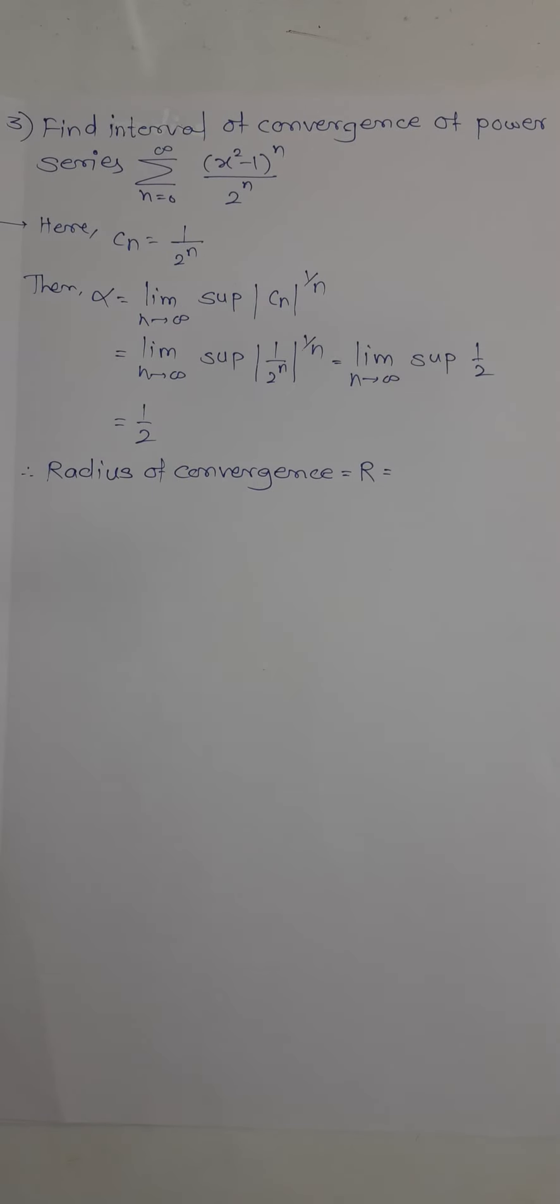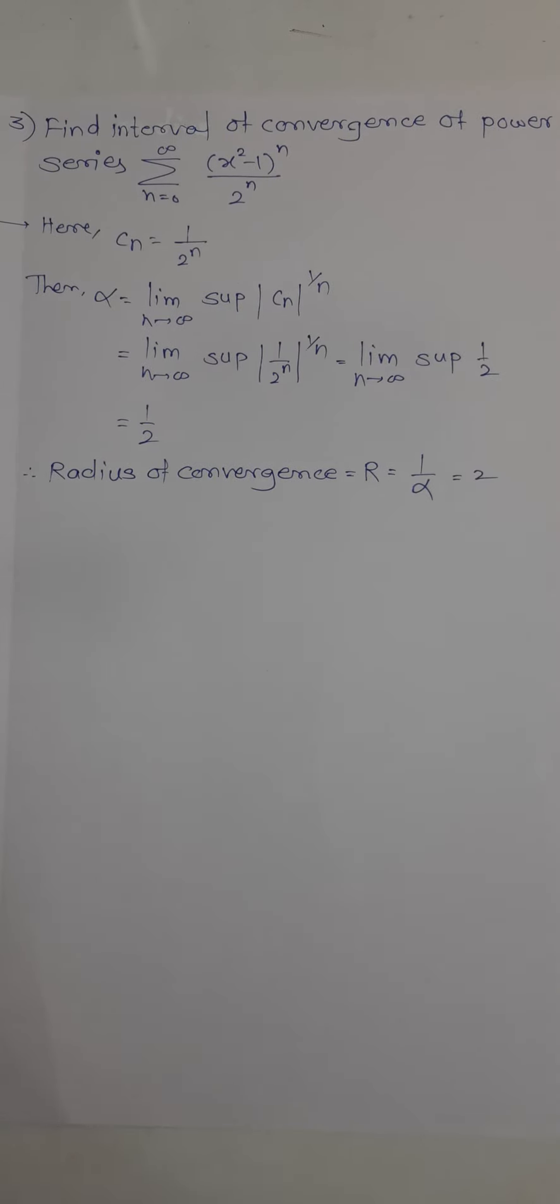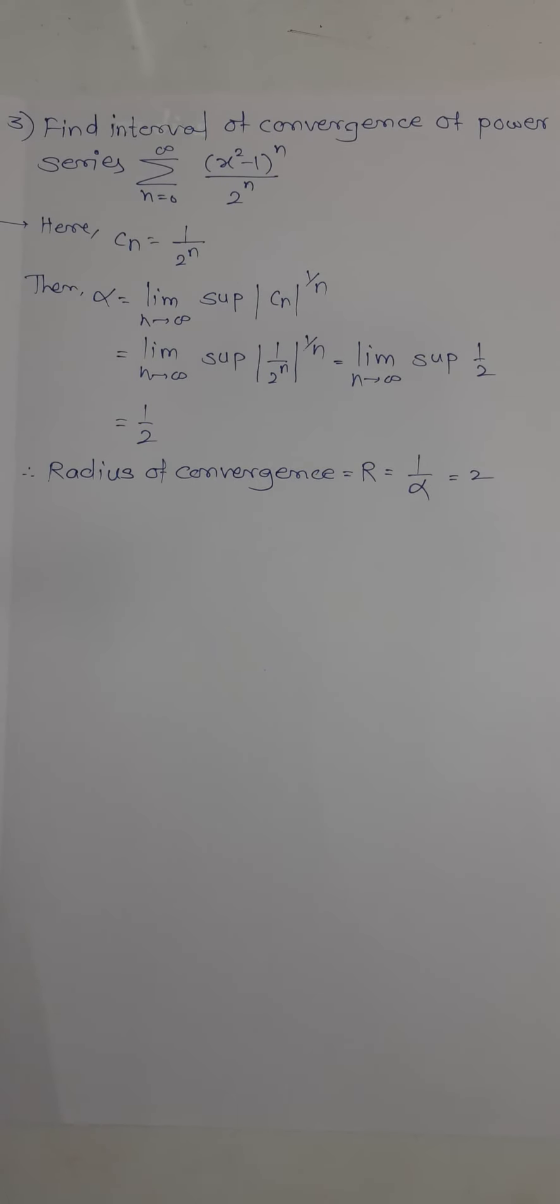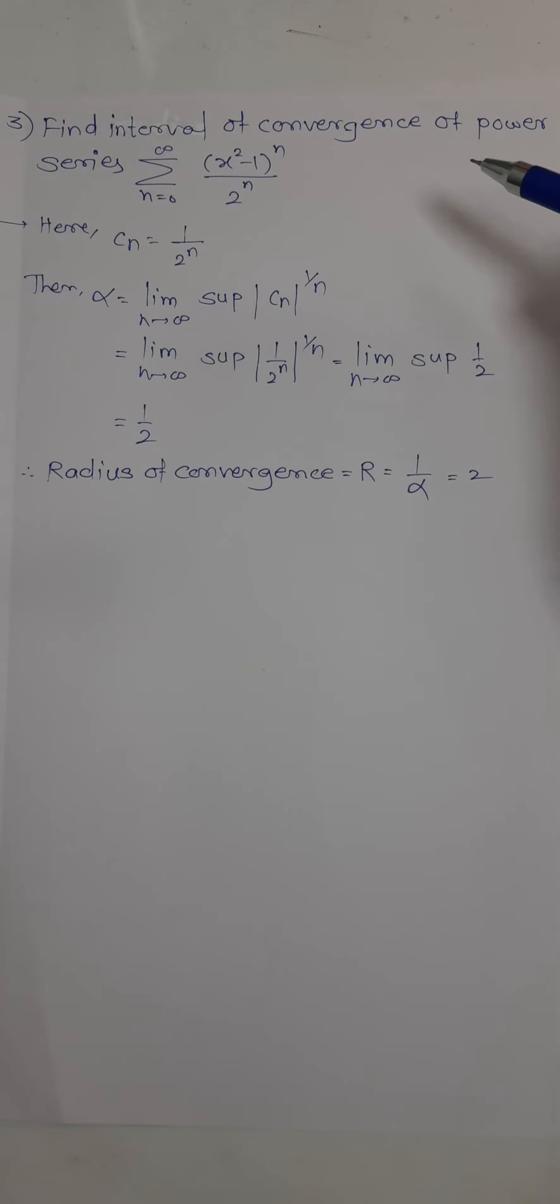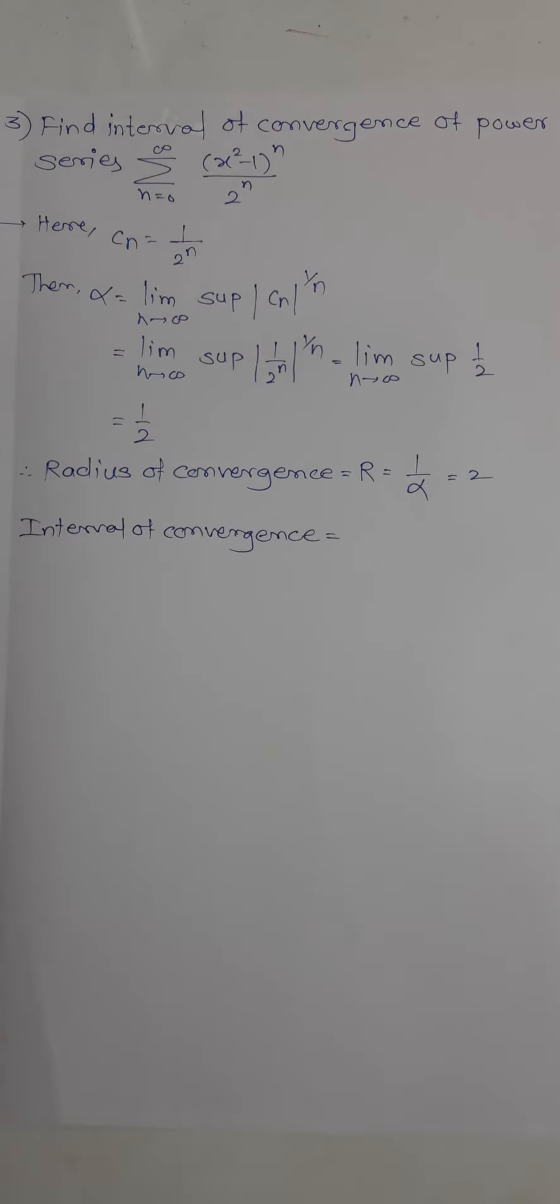The radius of convergence, normally denoted by capital R, has formula 1 upon alpha. If you put alpha equals 1 by 2, then 1 divided by 1 by 2 equals 2. So we calculated the radius of convergence. Now the main question is the interval of convergence.